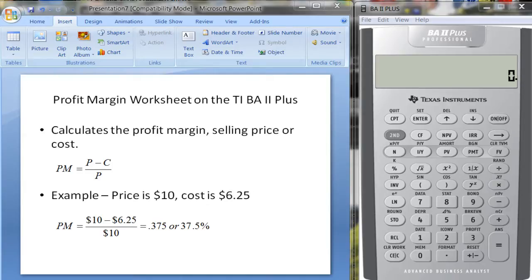Let's take a look at the profit margin worksheet on the Texas Instruments BA II Plus calculator. What this does is if you know the selling price and the cost, it calculates the profit margin. Or for example, you could figure out what price to sell your good at if you know what profit margin you want and how much it costs to produce each unit. So let's take a look at an example.